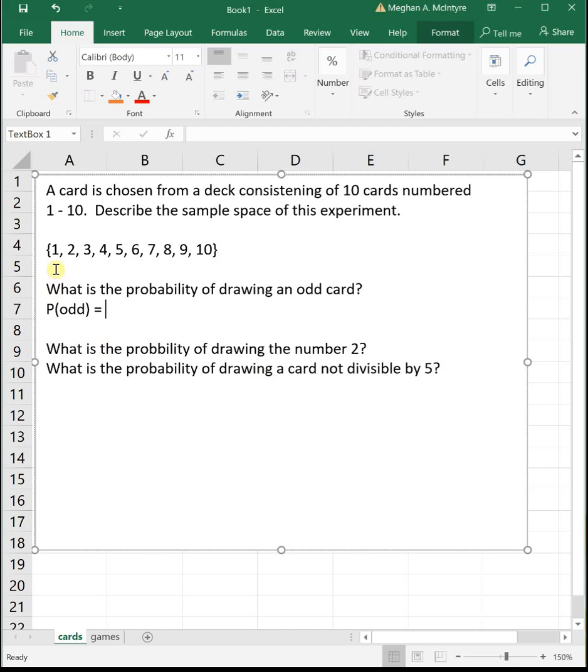So our odd cards are the numbers 1, 3, 5, 7, and 9. That's 5 of them. And then we have 10 total choices.